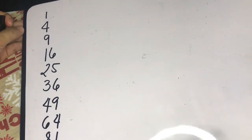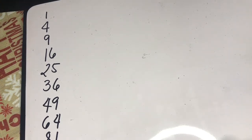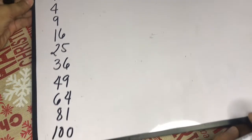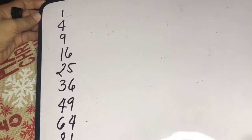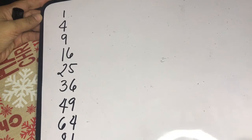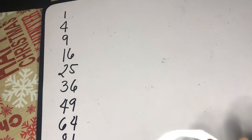Before we start, try to go over these numbers. What can you say about these numbers? We have 1, 4, 9, 16, 25, 36, 49, 64, 81, and 100. As you can see, these numbers are perfect square numbers.